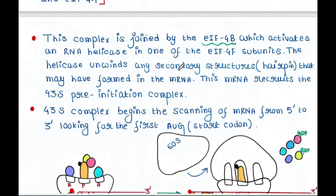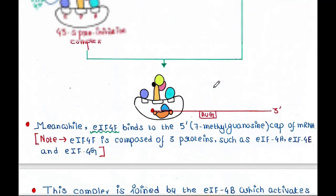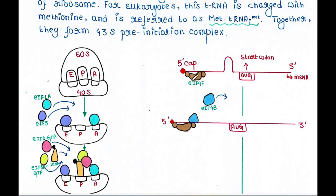Now what's the role of this eIF4B? Basically, it activates an RNA helicase in one of the eIF4F subunits. So we know that it has three protein subunits, and one of them has helicase activity. So basically, this eIF4B activates the helicase activity of that protein, and helicase activity is also required here.